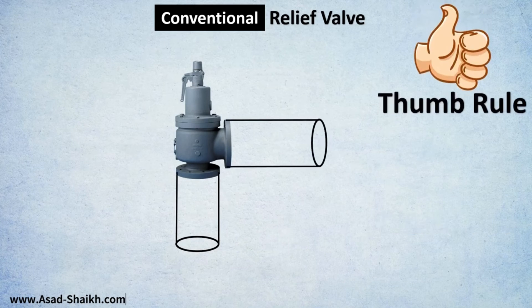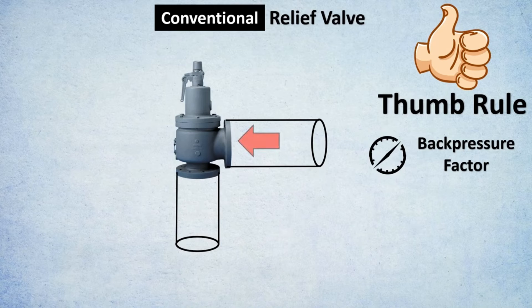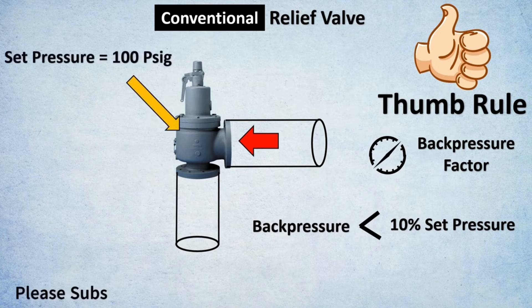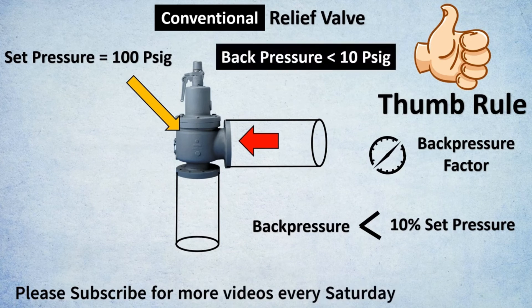The most important thumb rule when selecting relief valves is the back pressure factor. Back pressure is the pressure acting downstream of the relief valve outlet in the piping. For a conventional relief valve, the back pressure must be less than 10 percent of the set pressure. For example, if the set pressure is 100 psig, the back pressure should be less than 10 psig.